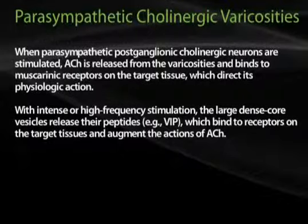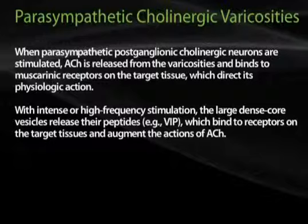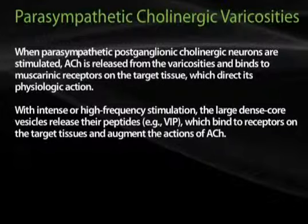When parasympathetic postganglionic cholinergic neurons are stimulated, acetylcholine is released from the varicosities and binds to muscarinic receptors on the target tissue, directing its physiologic action. With intense or high-frequency stimulation, the large, dense core vesicles release their peptides, for example VIP, which bind to receptors on the target tissues and augment the actions of acetylcholine.